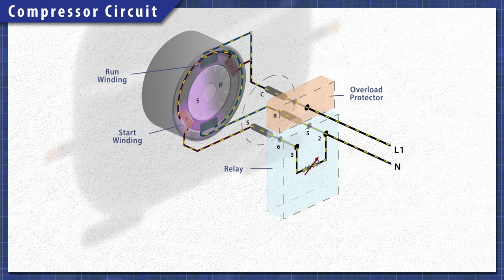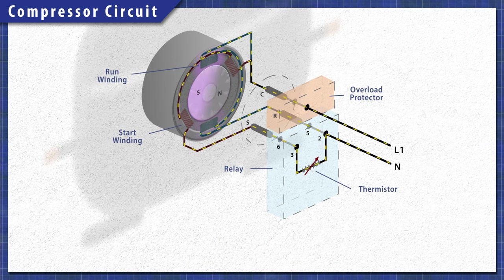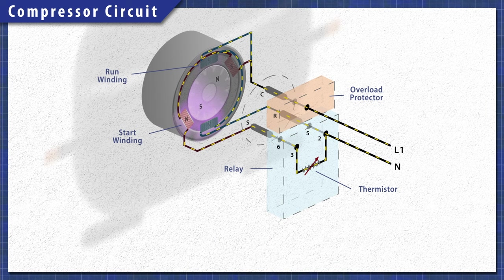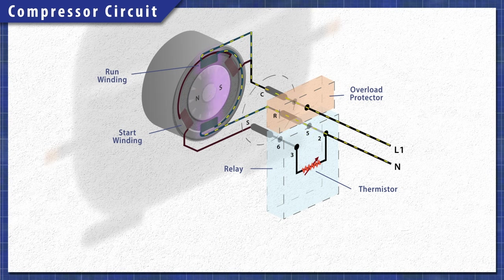Many refrigerators use a relay with a PTC thermistor. This heat-sensitive resistor acts like a switch. As the motor starts, the thermistor heats up and disconnects power to the start winding. This prevents it from overheating.